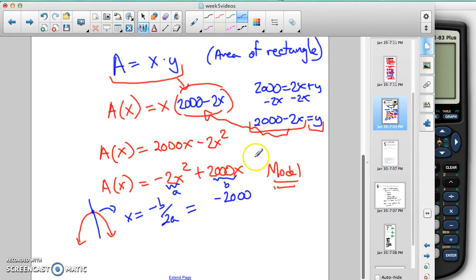And c happens to be 0. c equals 0 here because we don't have a c value afterwards. But we're not going to use that in this formula. We're going to use minus b over 2 times a. And we're going to work that out.